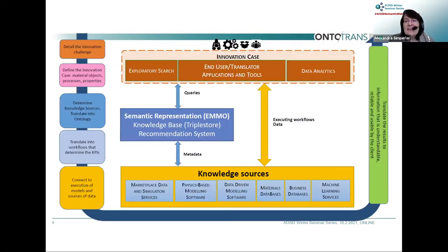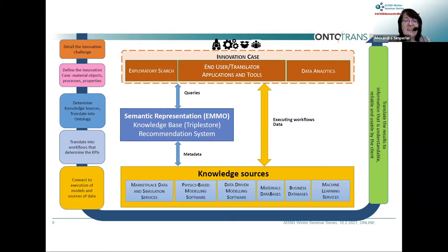Here is a high-level overview of what we want to develop in this project. The translation case mentioned before is like a band wrapped around this tool. We will have interfaces so customers can engage with us, and at the heart — the core of the OntoTrans tool — we have a semantic representation. We will have knowledge bases, recommendation systems, and metadata linking us to a variety of knowledge sources for data, workflows, and knowledge to create wisdom for the person with the innovation case.